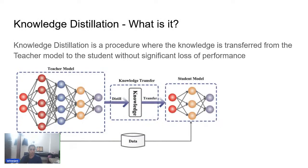So what is knowledge distillation? Knowledge distillation is a procedure where knowledge is transferred from the teacher model to the student model without a significant loss of performance. There are a couple of concepts here: one is the teacher model, one is the student model, and then there is the distillation — how do you do the transfer — which I'll explain over multiple slides. The whole procedure is where you want to transfer the knowledge present in the teacher as a function to the student, without much significant loss of performance.